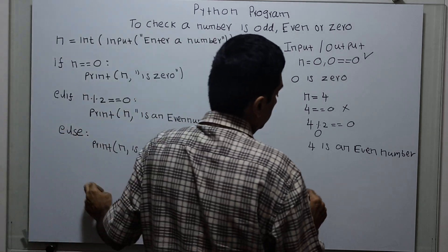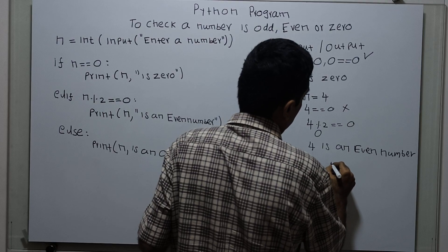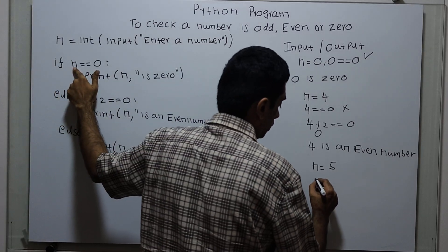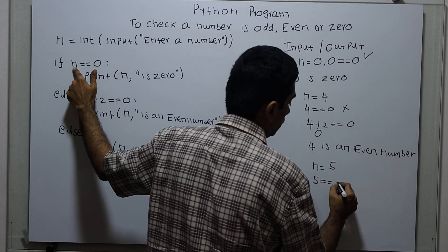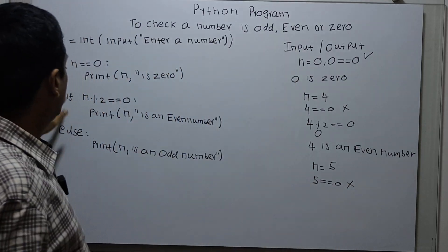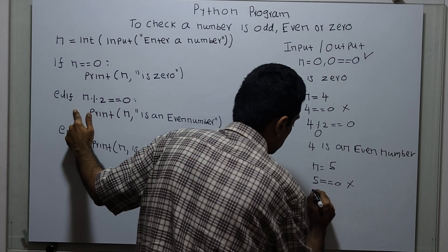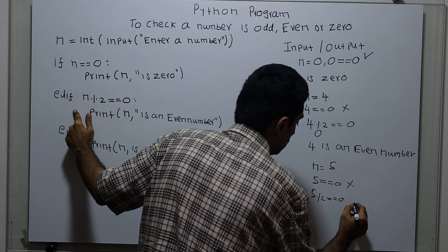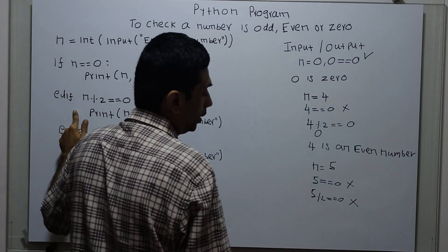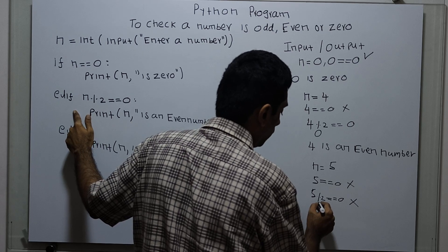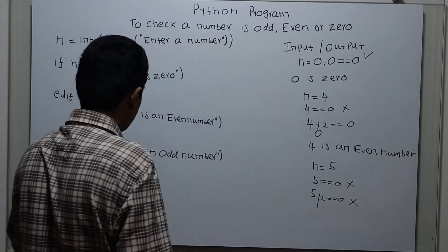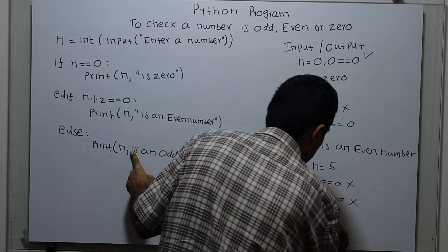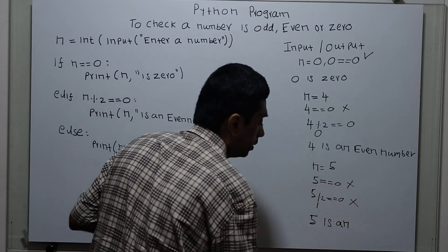Now I am executing the program again with n = 5. First we check the condition 5 == 0 — this is false. Then we come to elif and check 5 % 2 == 0 — this is also false, because when we divide 5 by 2 the remainder is 1. The modulo operator always returns the remainder. 1 == 0 is false. Then we come to the else and print: 5 is an odd number.